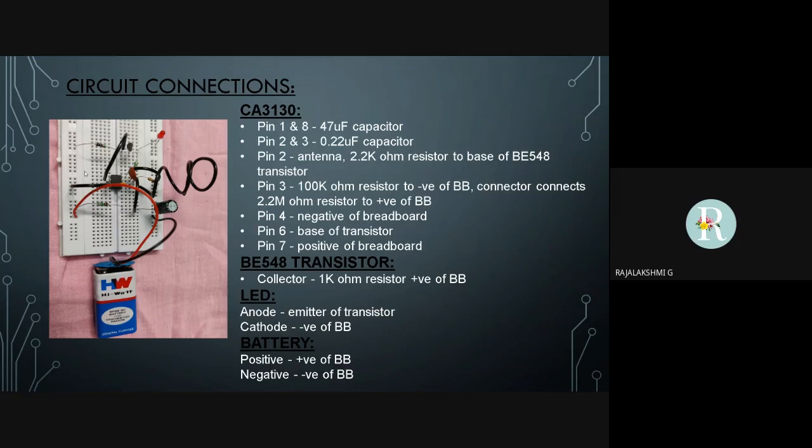As for the transistor, the collector is connected to the positive rail through a 1 Kilo Ohm resistor. For the LED, the anode is connected to the emitter of the transistor and the cathode is connected to the negative rail of the breadboard. For the battery, the positive and negative of the battery are connected to the positive and negative rail of the breadboard, respectively.